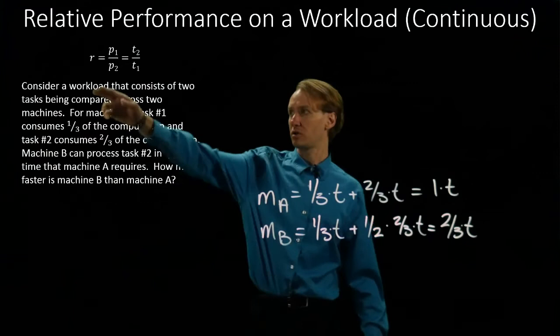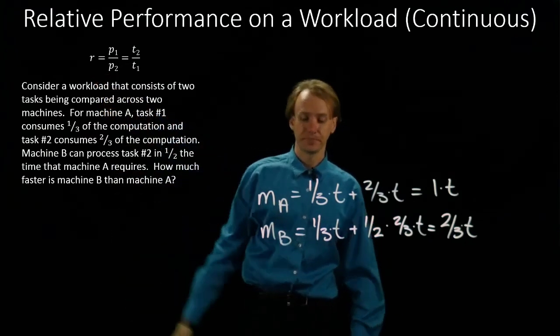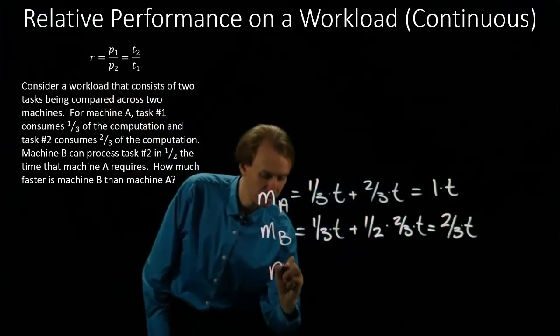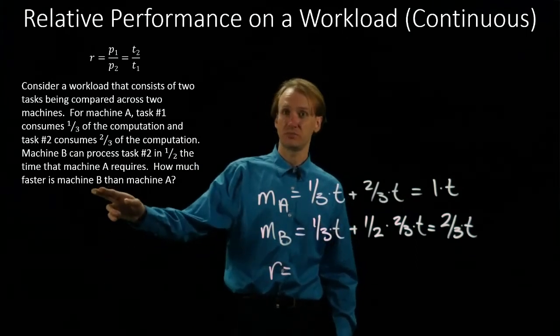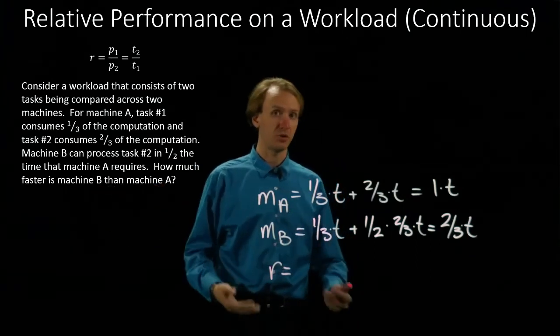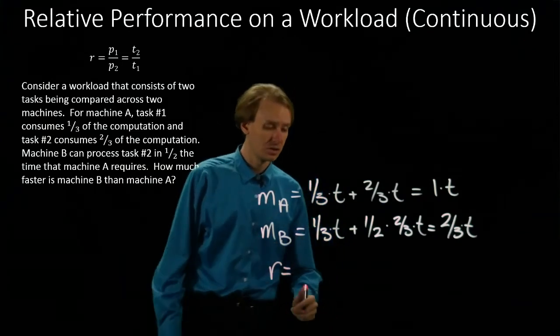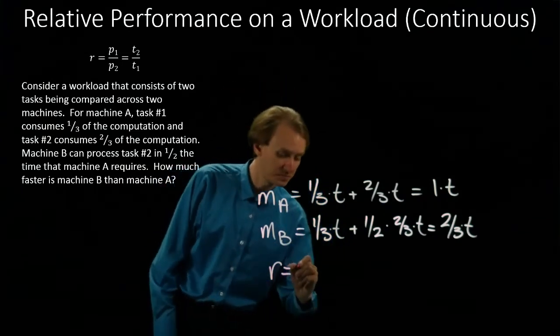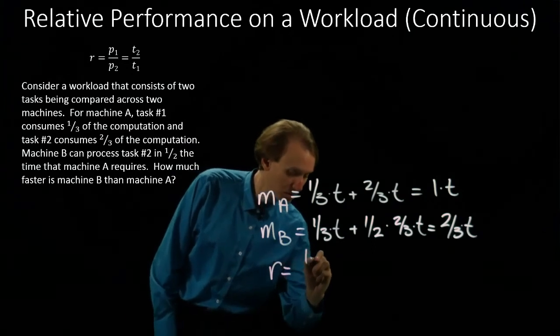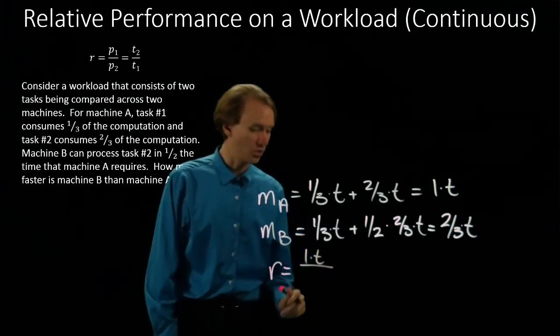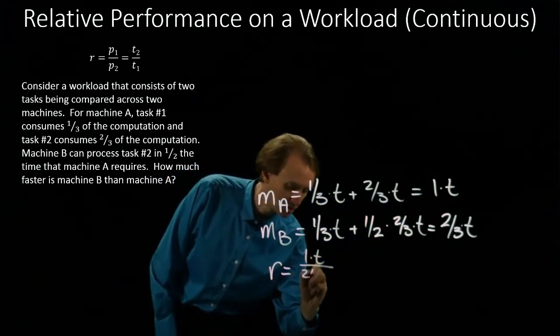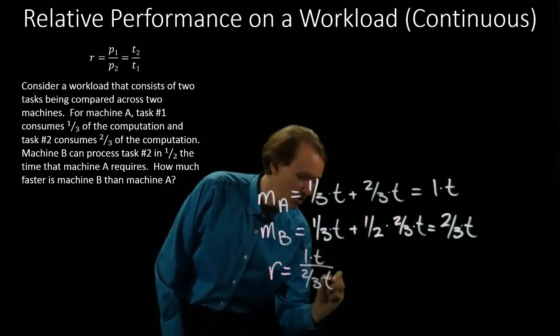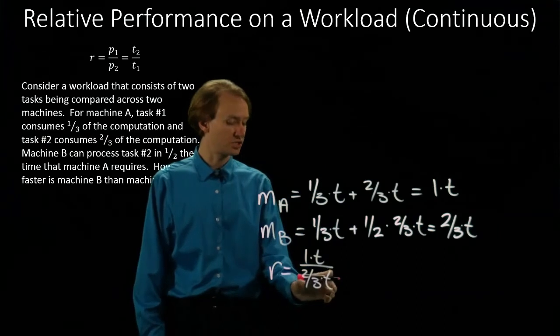So again, I can put this into my relative performance equation. And since I'm interested to see how much faster machine B is than machine A, I'm going to put machine B on the bottom, since I have execution times. So I have 1×T on the top for machine A and ⅔×T on the bottom for machine B.